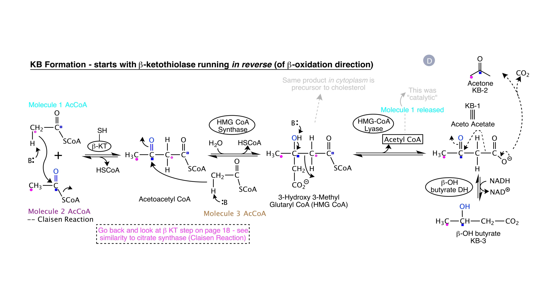Acetoacetate and beta-hydroxybutyrate do not need any special transporter to exit the cell. They diffuse through the mitochondrial membrane and then the cell membrane, and are transported by the circulatory system from the liver to organs that need them for energy. Ketone bodies are portable forms of acetyl-CoA; in a real sense, the liver, by making these ketone bodies, is acting as a food caterer, where ketone bodies represent food delivered to other organs.